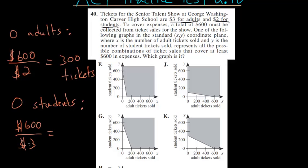$600 divided by 3 is $200. So, if no students bought tickets, then 200 adults would have to buy tickets so that the $600 in expenses are met.